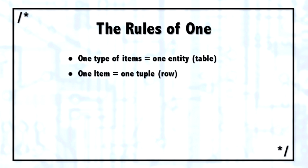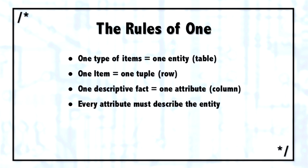Each one item should be represented in a table by one row or one tuple. Each one descriptive fact or one attribute about those items should be represented in one attribute or one column in the database. And then every one of those columns should actually describe that specific entity, not some other entity.